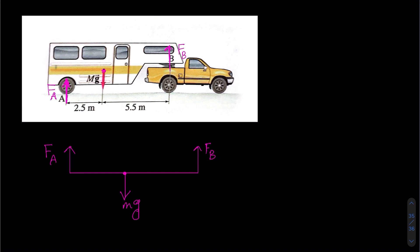To find F sub A, we use the second condition of equilibrium, which states that the sum of all clockwise and counterclockwise torques about a pivot must equal zero. Since we want to find F A, we choose point B as the pivot so that F B creates no torque about it.